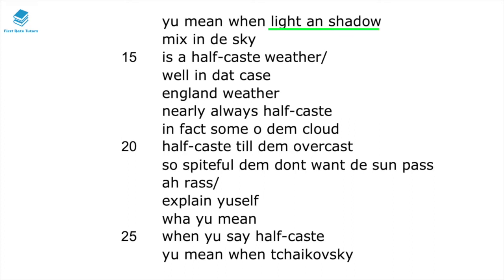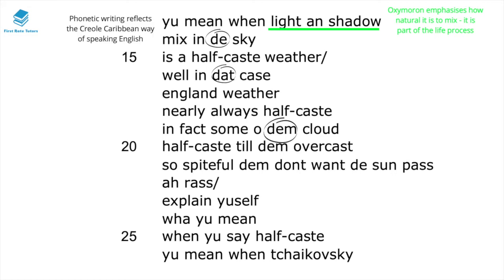He's talking about light and shadow in the sky. The oxymoron here emphasises how natural it is for things — even in nature — to mix; this is part of the life process. The phonetic writing — 'that,' 'them' — reflects the Creole-Caribbean way of speaking English. In line 15, he sarcastically asks: if the light and shadow in the sky mix, does that make it a half-caste weather? This shows just how silly and absurd racism is, and especially this racist slur.